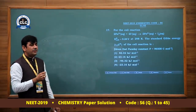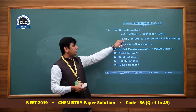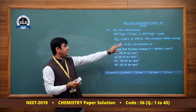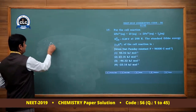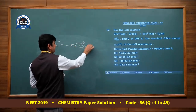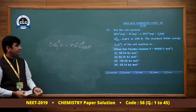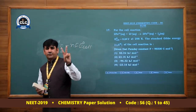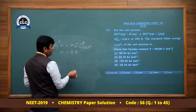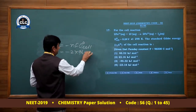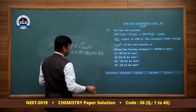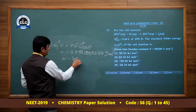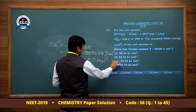Question number 17: For the cell reaction 2Fe³⁺ + 2I⁻ → 2Fe²⁺ + I2, E°_cell = 0.24 V at 298 K. ΔG° = −nFE°_cell. Number of electrons transferred n = 2 (2Fe³⁺ → 2Fe²⁺). F = 96500 C/mol, E°_cell = 0.24 V. Calculating: ΔG° = −2 × 96500 × 0.24 = −46.32 kJ/mol. Option 3 is correct.